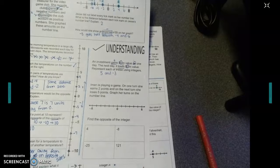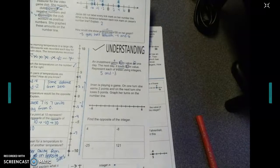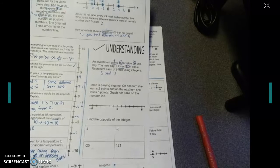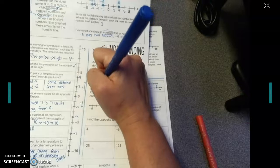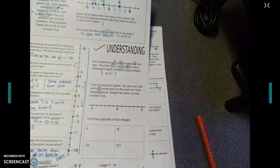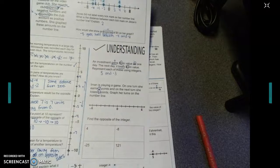Miss is playing a game. On one turn, she earns 2 points. And on the next turn, she loses 5 points. We're going to graph her turns on the number line. So let's go and look for our numbers. We have 2 and 5.